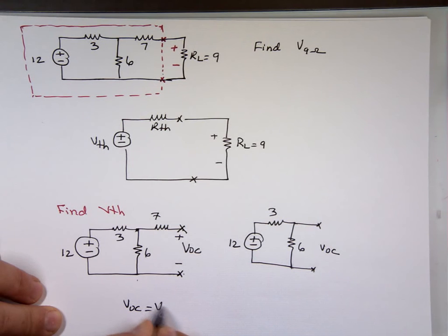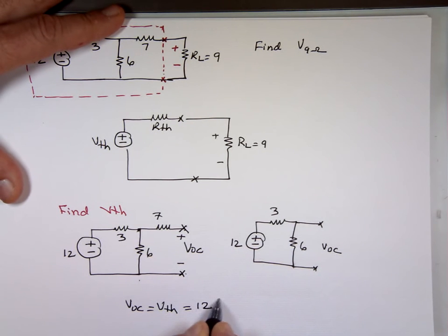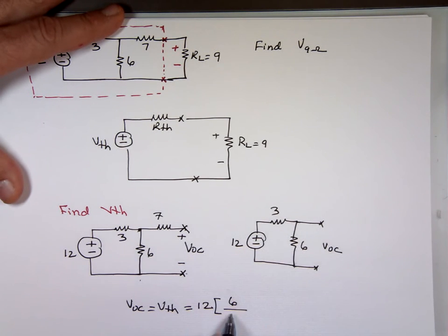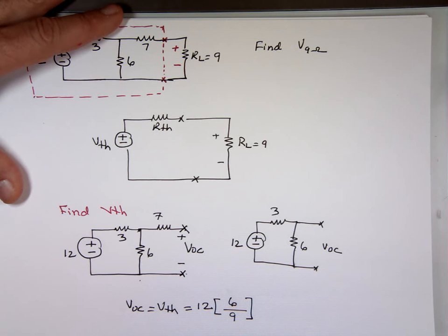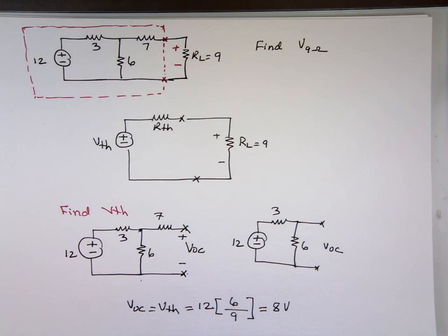So can I find the V-open circuit which is V-7? That's going to be what? Voltage division: 12 times what? 6 over the sum of them, what's 6 and 3? 9. Is that 8? 12 times 6 over 9, I think that's an 8.